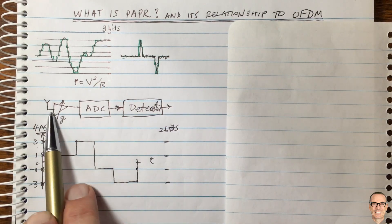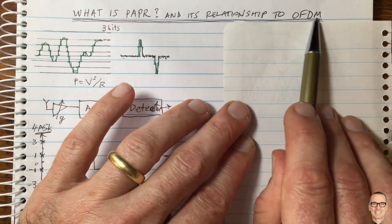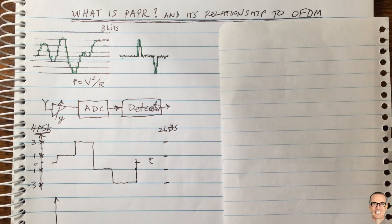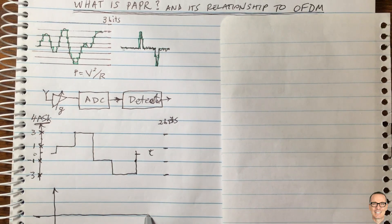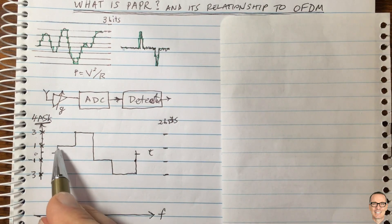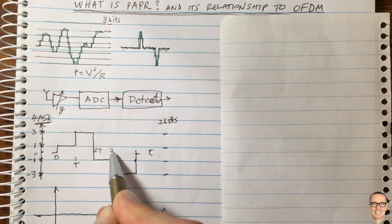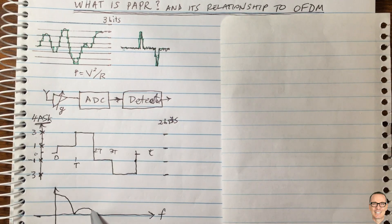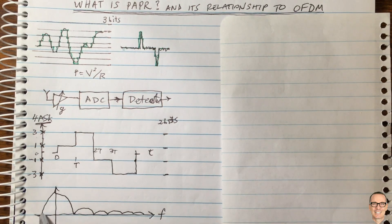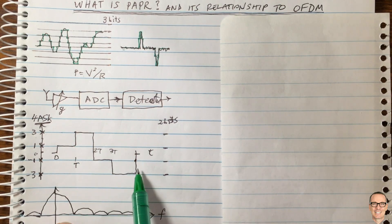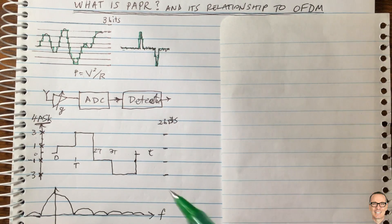This is in a basic single-channel baseband communication system, but we want to think about OFDM. In the frequency domain, this signal has a sinc-function spectrum, changing at a rate of capital T — at 0, T, 2T, 3T, and so on. In OFDM, instead of sending these simple on-off signals, we're sending multiple signals at the same time on different carriers — orthogonal frequency division multiplexing.